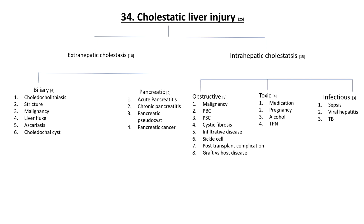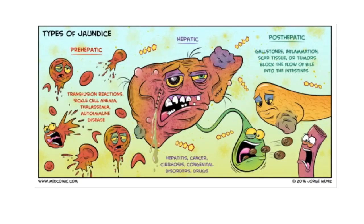Before we get into the 25 etiologies, let's quickly talk about jaundice. How do we classify jaundice? We describe it as being either pre-hepatic, hepatic, or post-hepatic, in terms of the pathobiology.